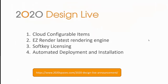It's just that you might be missing out on some of the functionalities presented today. These are: number one, cloud configurable items — the capability to easily add items from the cloud and configure different styles for your projects; number two, the Easy Render rendering engine, providing great-looking renderings in a short amount of time; number three, soft key licensing, so you don't have to worry about losing or getting a key stolen; and number four, automated deployment and installation, ensuring you always have the latest version of 2020 Design Live on your computer.